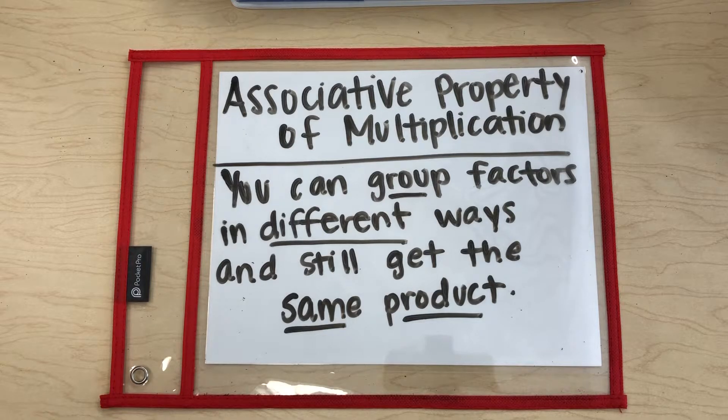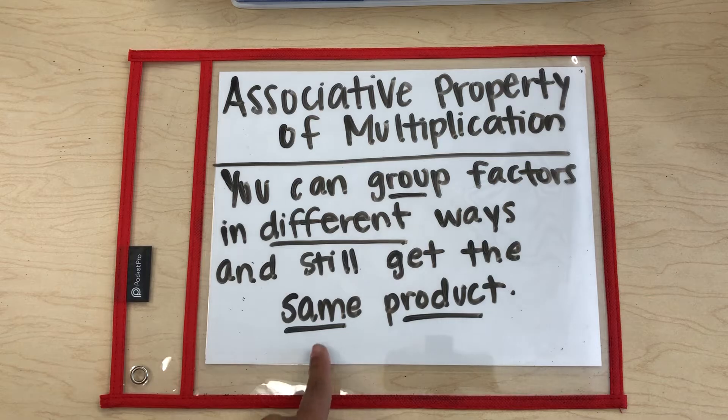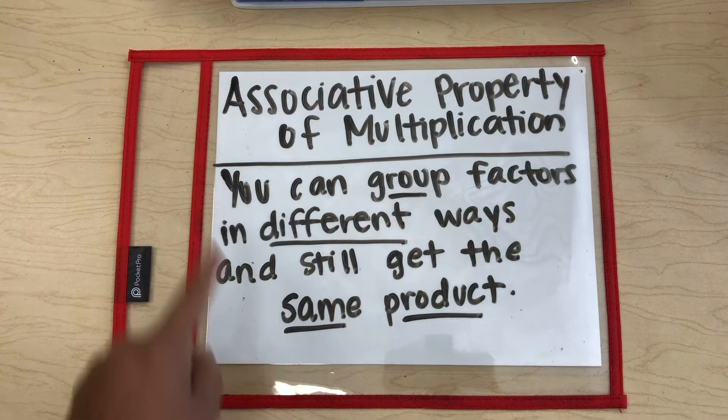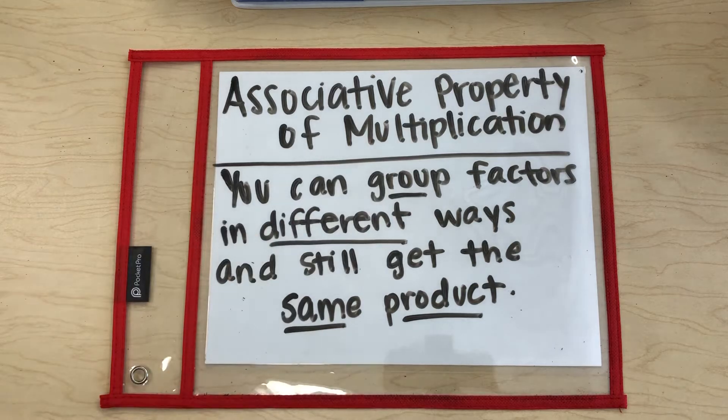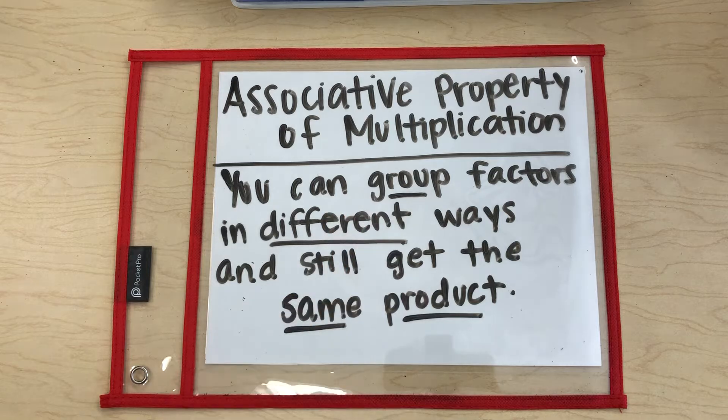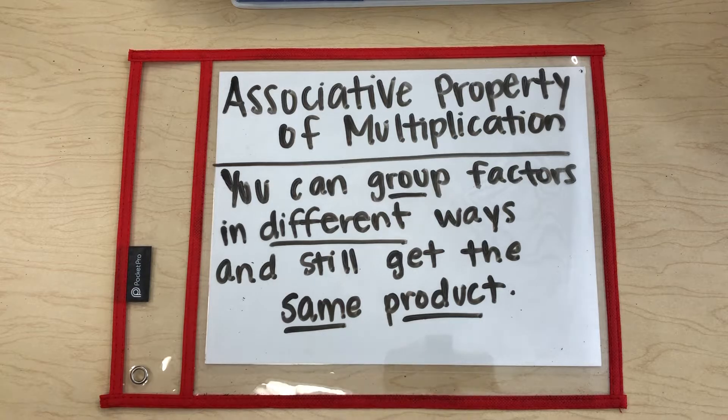I underlined some key words in here that say group, different, and same product. We should be able to, when we use this associative property, we should be able to group our numbers together in two different ways. And when we multiply those together, we should still get the same product. Okay, so let's go ahead and check it out.